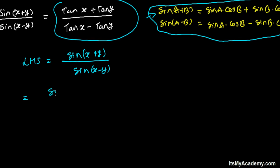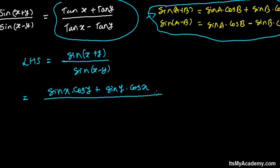So it's going to be sine(x)cos(y) plus — since it is plus it will be plus — sine has already taken x, so sine will be left with y and cosine is given x. It's minus for the denominator, so that's why it will be minus and the rest is the same: sine(x)cos(y) minus sine(y)cos(x).